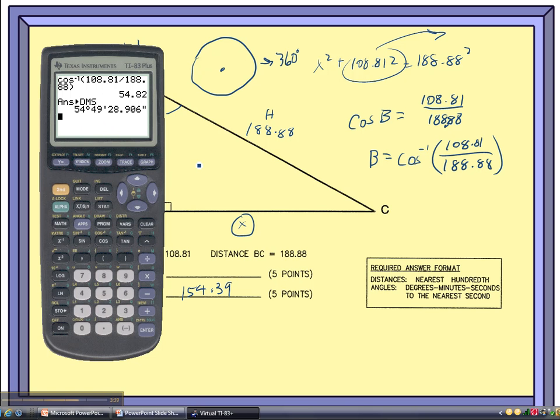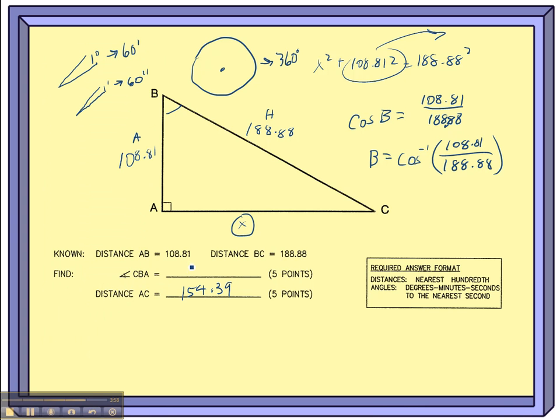Now, I don't write down this whole thing. It says that I have to round this to the nearest second, which is this 28 business. The 9 behind the decimal tells us that we have to round that 8 up to a 9. So I'm going to write 54 degrees, 49 minutes, and 29 seconds.